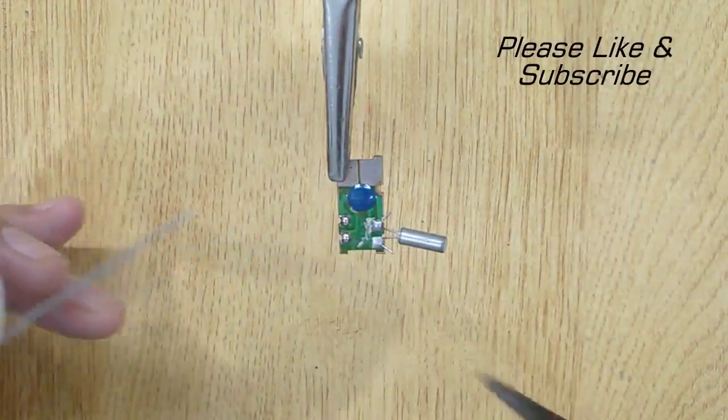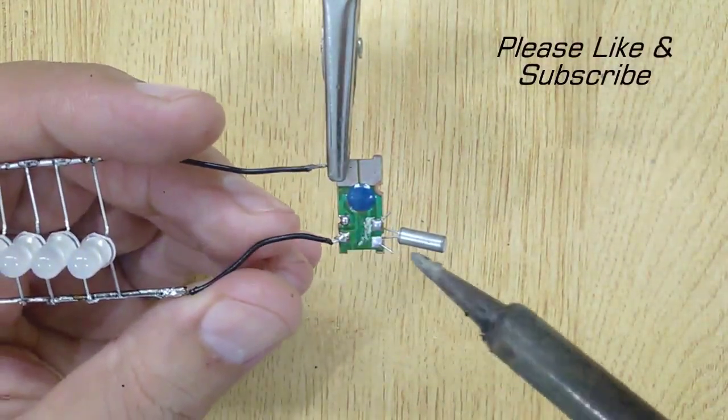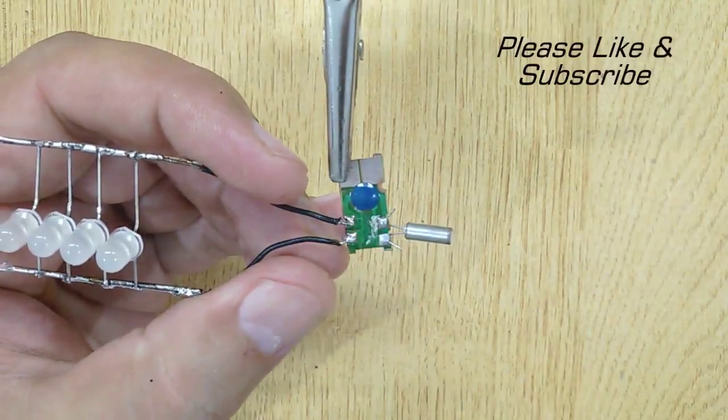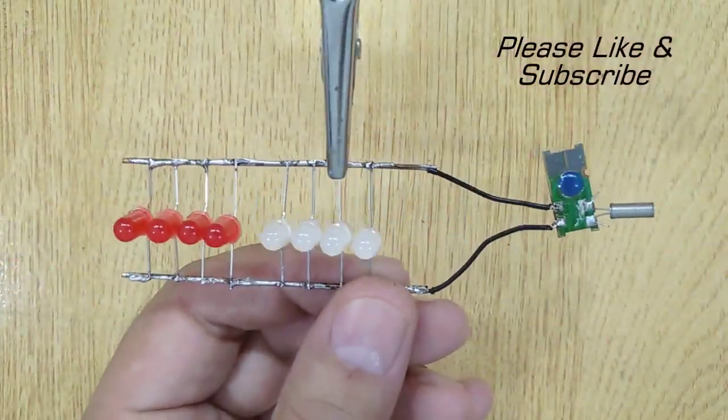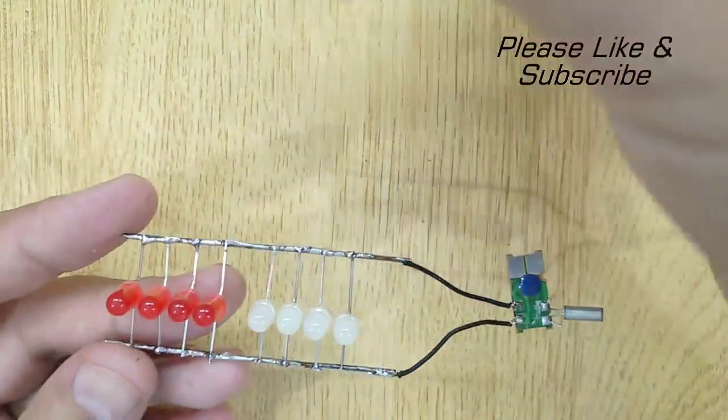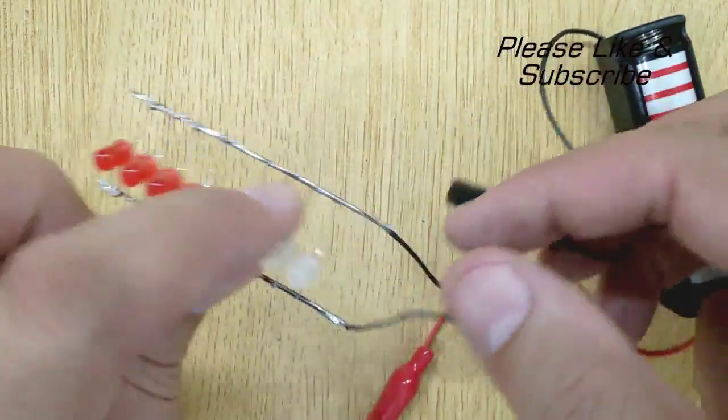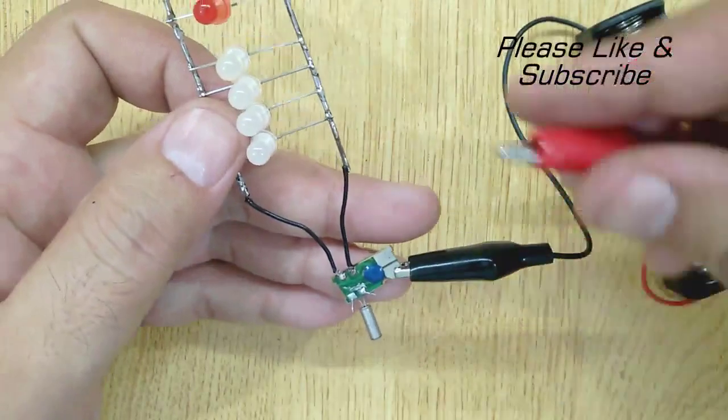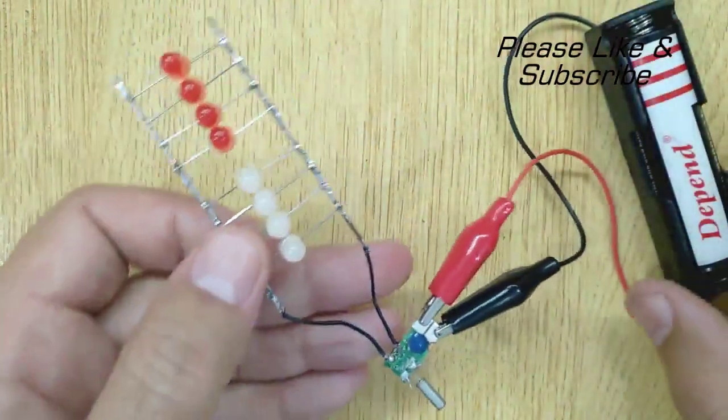Apply some solder on these two points and solder wires of LEDs. Now connect the 3.7 volt battery and you are done.